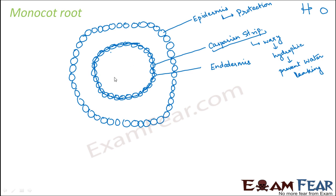Inside the endodermis is the vascular tissue — xylem and phloem — which are the conducting tissues that conduct food particles, nutrients, minerals, and water. If any foreign particles enter this area and get into the vascular tissue, they could be conducted throughout the plant body and harm the entire plant. Therefore, the vascular tissue is extremely protected by the endodermis and the Casparian strip, which do not allow foreign particles to enter.